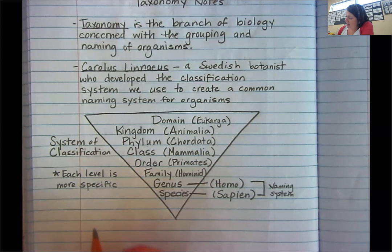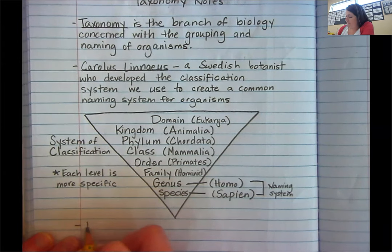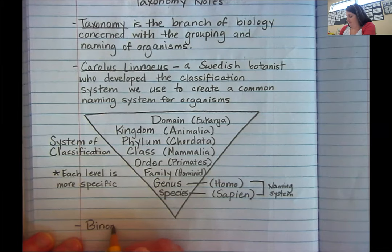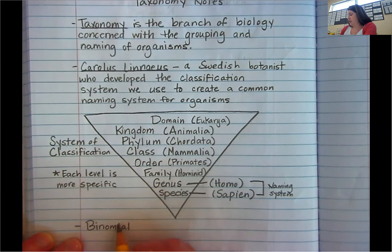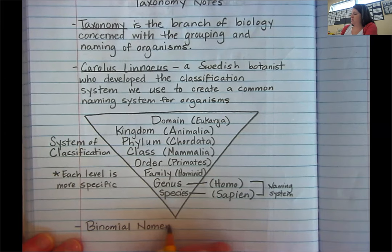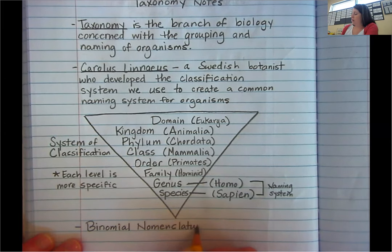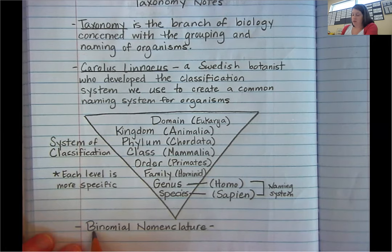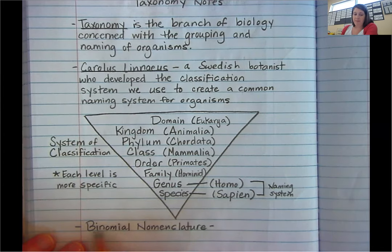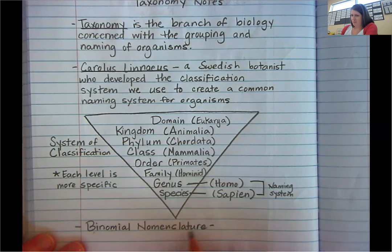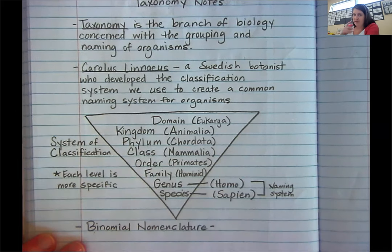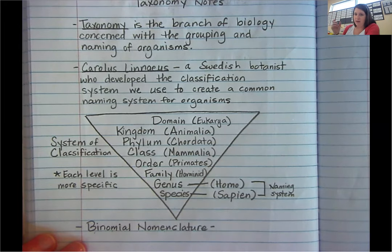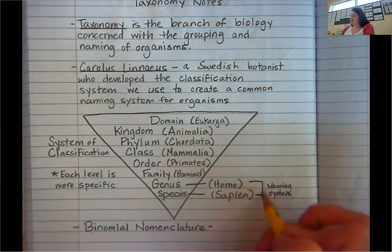The system of naming is called binomial nomenclature. It's kind of a redundant wording: 'bi' means two, 'nom' is from the word name — so 'to name naming system,' essentially, if you broke it down. Binomial nomenclature has to do with the genus and species.